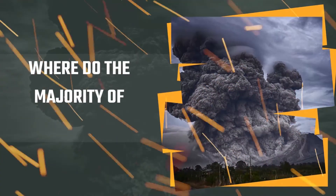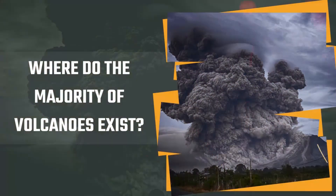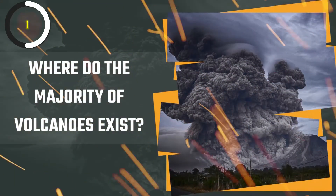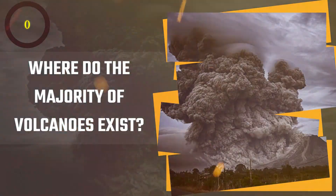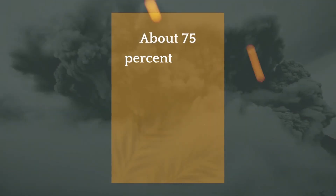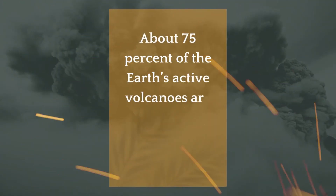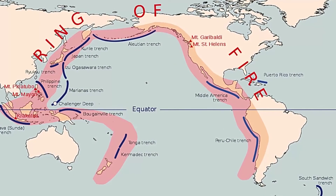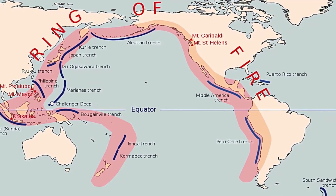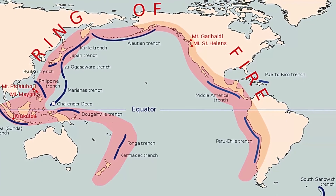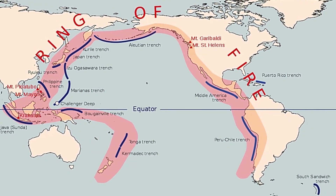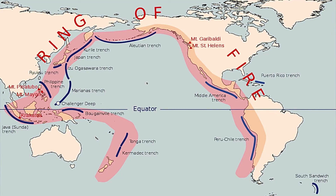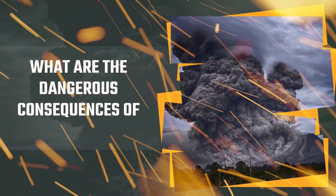Question number eight: where do the majority of volcanoes exist? About 75 percent of the earth's active volcanoes are located around the Ring of Fire. It is a horseshoe-shaped area that extends from the southern point of South America across North America's west coast, along the Bering Sea to Japan, and ending at New Zealand.